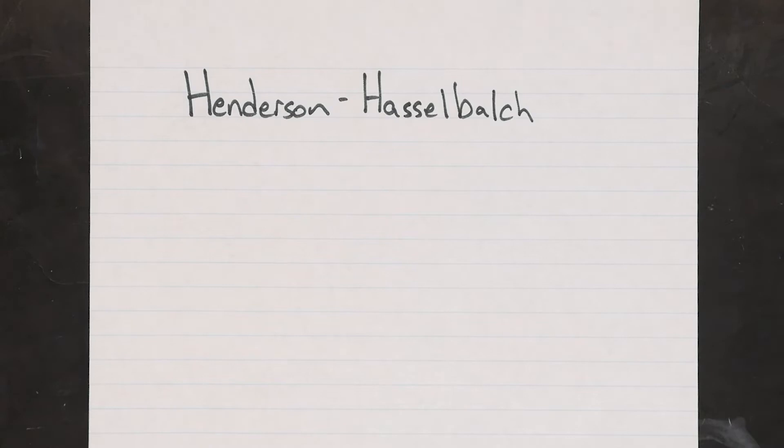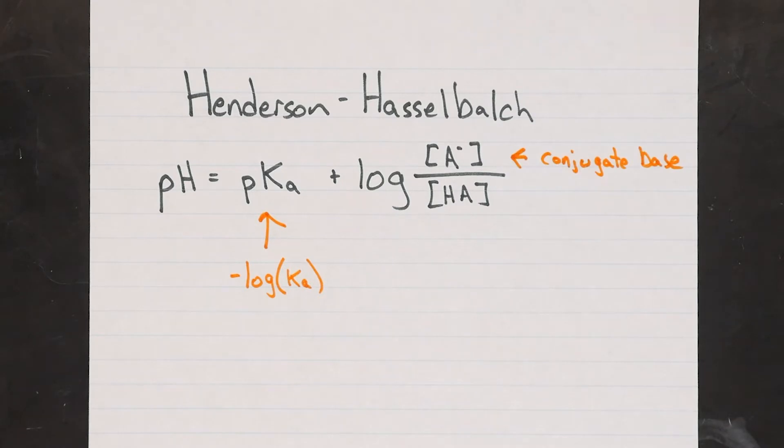To measure it, we can make use of the famous Henderson-Hasselbalch equation. This equation states that the pH of a solution of a weak acid is equal to the pKa for that acid, which is just the negative log of the Ka, plus the log of the ratio of the concentrations of conjugate base and the conjugate acid.